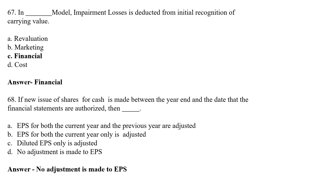In the dash model, impairment losses are deducted from the initial recognition of carrying value. Option A: Revaluation, Option B: Marketing, Option C: Financial, Option D: Cost. The correct answer is Option C — Financial. In the financial model, impairment losses are deducted from initial recognition of carrying value.